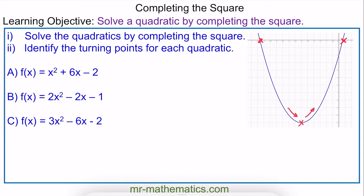We'll begin with function A, where we have x squared plus 6x minus 2, and to complete the square we need to make it equal to 0. So we'll begin by creating the square, which is x, and then we take the coefficient of b — in this case half of 6 — so it is x plus 3.